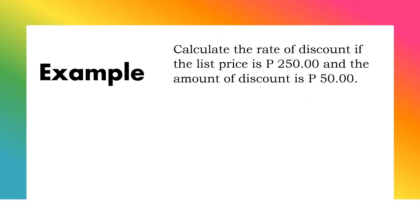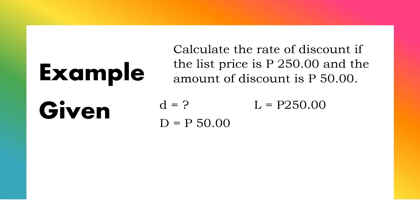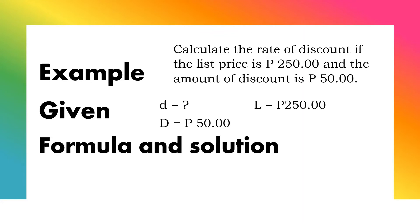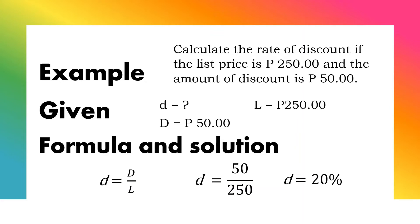Another example: calculate the rate of discount if the list price is 250 pesos and the amount of discount is 50 pesos. The given are the list price of 250 pesos and the trade discount of 50 pesos, and we are looking for the discount rate. Using the formula, discount rate equals trade discount divided by list price: 50 divided by 250. Our discount rate is 20%.